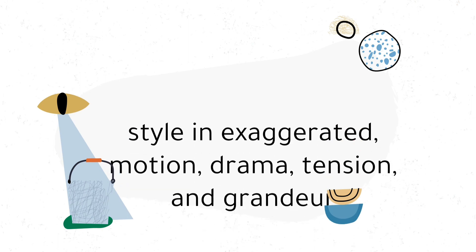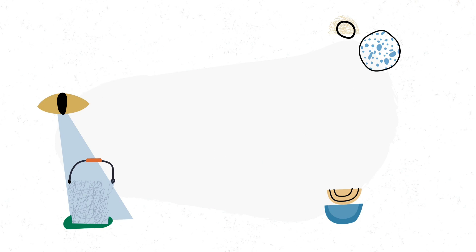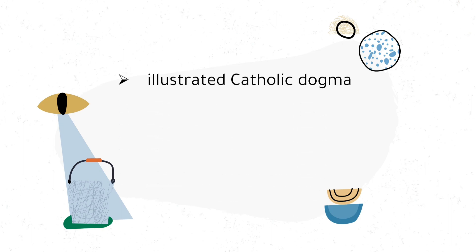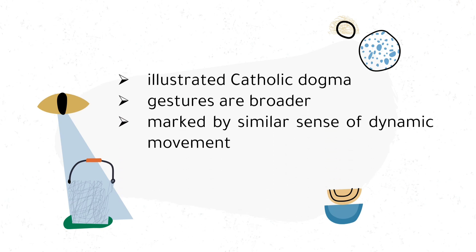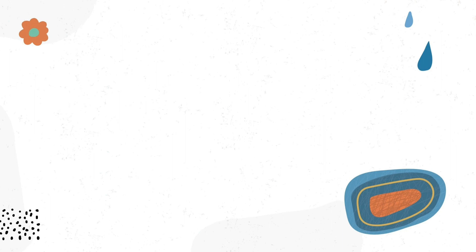Baroque is a style in exaggerated motion, drama, tension, and grandeur. The Roman Catholic Church highly encouraged this style to spread Christianity, while the aristocracy used this style for architecture to impress visitors, express triumph, power, and control. Baroque painting illustrated the Catholic dogma — a principle set by the authority of the Church. Their gestures are broader, marked by a dynamic movement and active use of space, and it is designed to create spectacles and illusions.